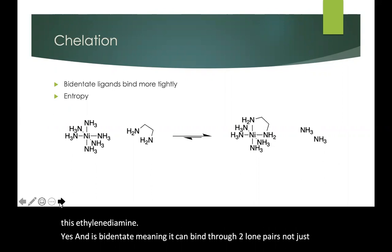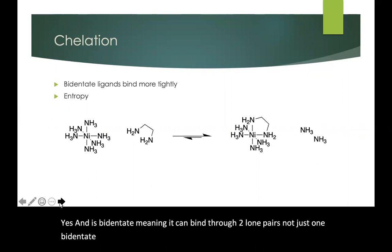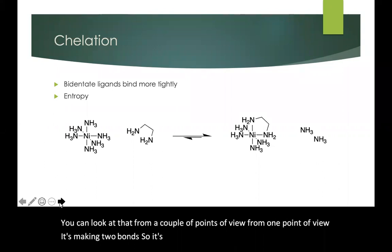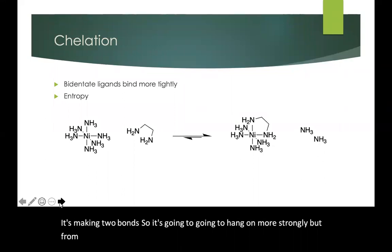Bidentate ligands in general tend to bind more tightly than monodentate ligands. You can look at that from a couple of points of view. From one point of view it's making two bonds so it's going to hang on more strongly, but from an entropic point of view when we replace two monodentate ligands with one bidentate ligand,